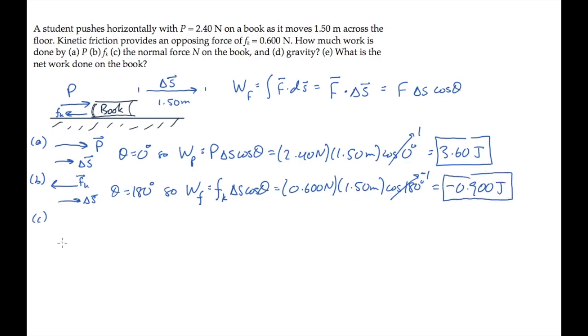Part C asks for the work done by the normal force. In this case, the normal force is directed straight up, perpendicular to the displacement, so the angle theta is 90 degrees. The work done by the normal force will be 0 because cosine of 90 degrees is 0. Any force perpendicular to the displacement produces no work.